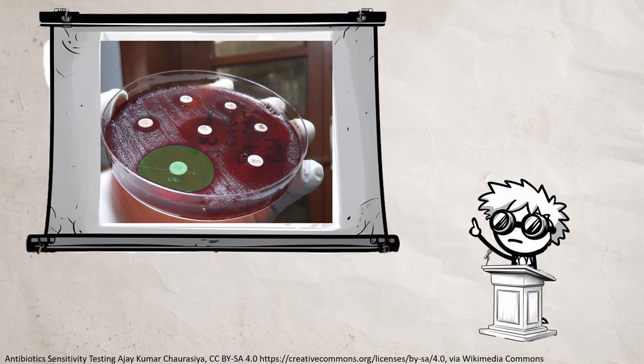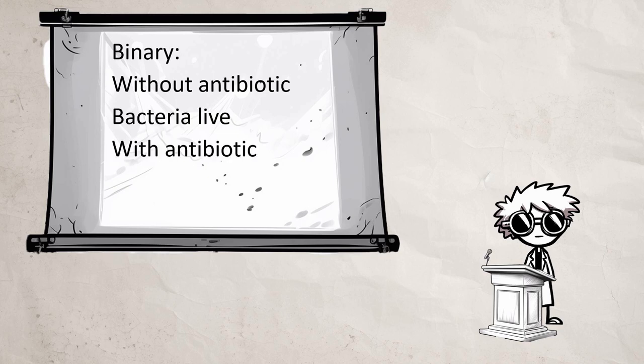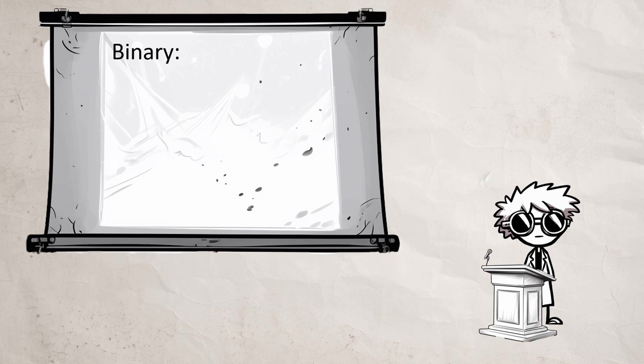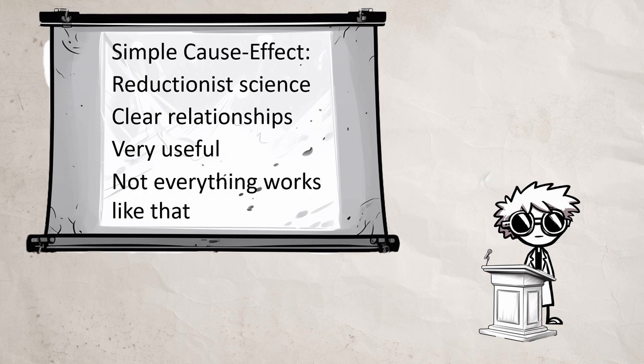Antibiotic causes dead bacteria. Here's the binary in action. Without antibiotic, bacteria live. With antibiotic, bacteria die. And this is very useful to medicine. Without antibiotic, patient dies. With antibiotic, patient is cured. This simple cause and effect relationship is easy to understand. We might call this the reductionist approach to science. It makes things into components and then understands each component part. This can be very useful. But not everything works like that.